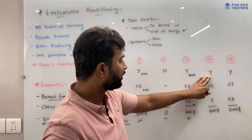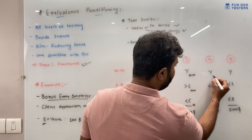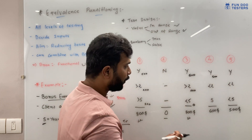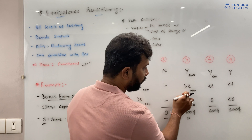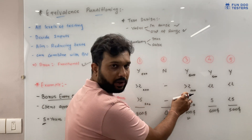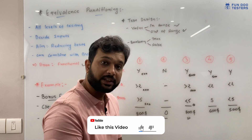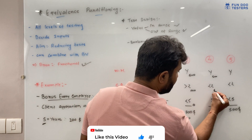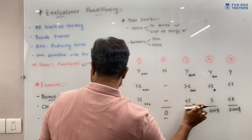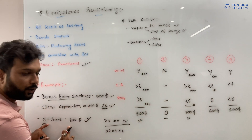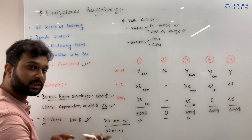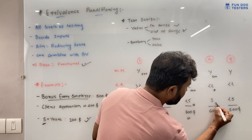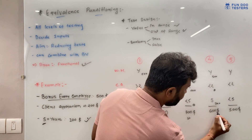Scenario 4: The employee gets the default $500 yearly bonus as they are a current employee. They have not received more than two client appreciations, so that gives $0. But they have completed five years, so they get $100. In total, they receive $600.